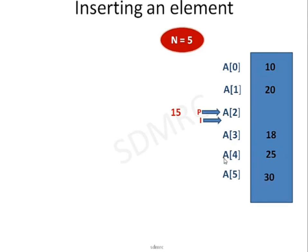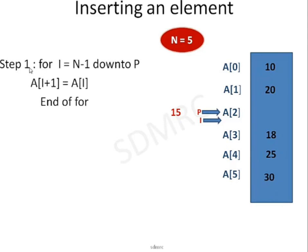This happens when i is equal to n minus 1, when i is equal to 3, and when i is equal to p. That's why for step number 1, I write a loop. The counter variable is i, beginning with n minus 1, decrementing down to p, because I am decrementing the values from 4 to 3 to 2. So: for i = n-1 down to p, do a[i+1] = a[i]. End of for.